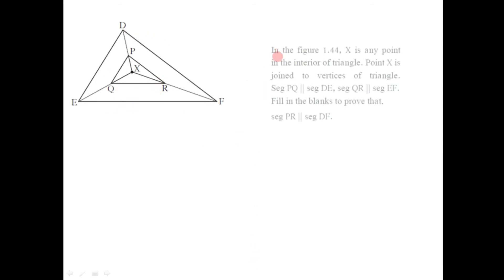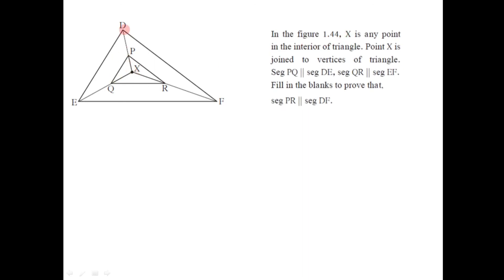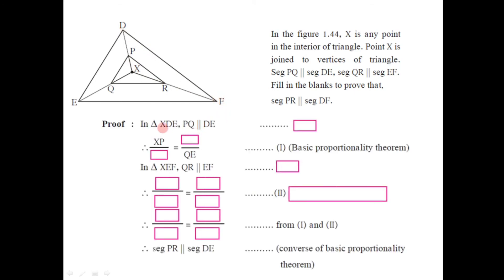The next question: in this figure, X is any point in the interior of triangle DEF. Point X is joined to the vertices, giving segments XD, XE, and XF. It is given that segment PQ is parallel to DE and segment QR is parallel to EF. We have to prove that segment PR is parallel to side DF. In triangle XDE, it is given that PQ is parallel to DE — reason: given.